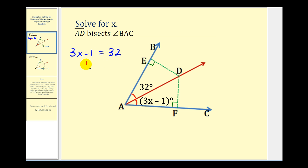We could add one to both sides. We'd have three x equals 33. Now we can divide both sides by three. X is equal to 33 divided by three, so x equals 11.